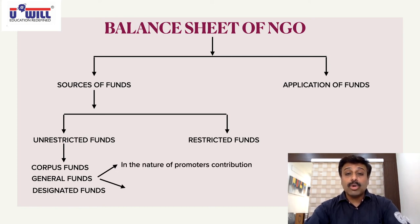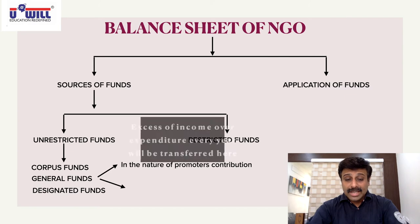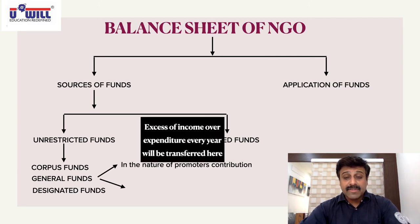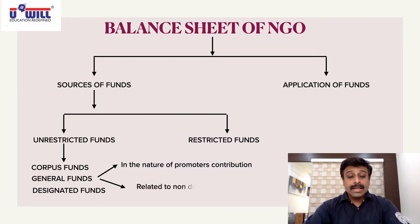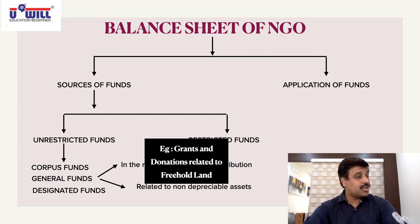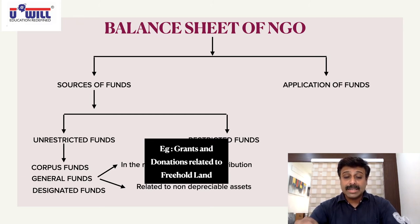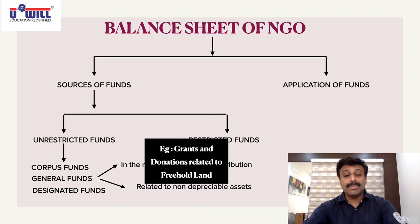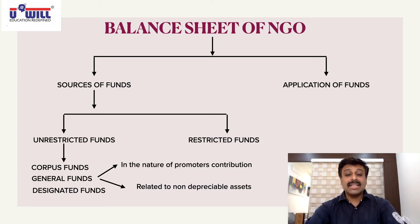The two parts of general fund are: first, in the nature of promoters' contribution — this is the excess of income over expenditure transferred every year. Second, related to non-depreciable assets — for example, if you receive a grant or donation related to freehold land (a non-depreciable asset), that goes to general fund but is classified under 'related to non-depreciable assets.' Write this in your notebook as it will appear in practical questions.